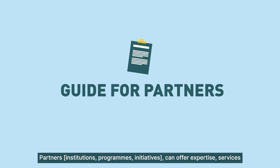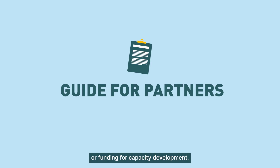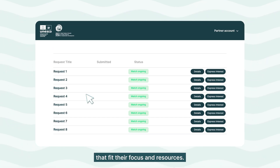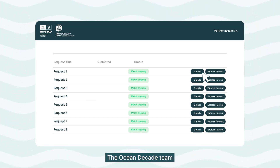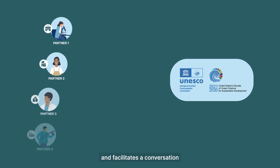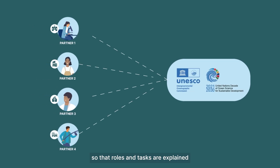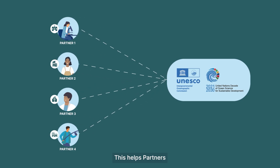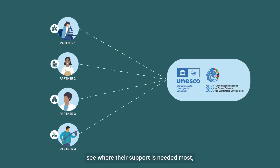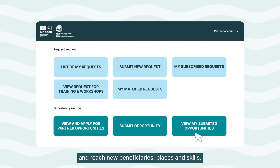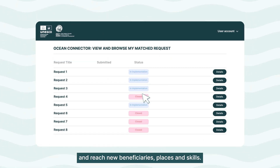Partners can offer expertise, services, or funding for capacity development. Partners respond to requests that fit their focus and resources. The Ocean Decade team connects partners to those most in need and facilitates a conversation so that roles and tasks are explained clearly for everyone. This helps partners see where their support is needed most, use resources well, and reach new beneficiaries, places, and skills.